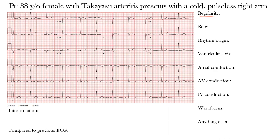Our 38-year-old female with Takayasu Arteritis presenting with a cold, pulseless right arm has this EKG. First, you probably notice this is a regular rhythm. When we look at regularity, we want to look at the R-to-R intervals. The R wave is the first positive deflection after a P wave. This is our R-to-R interval from one R wave to the next.